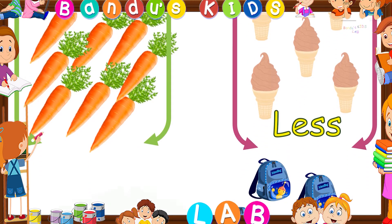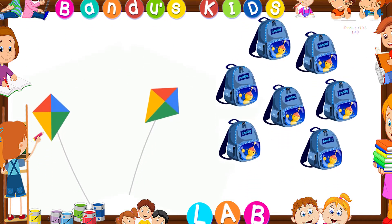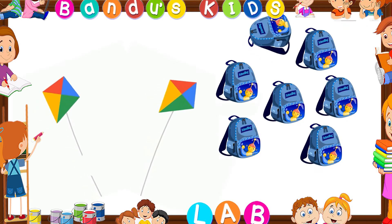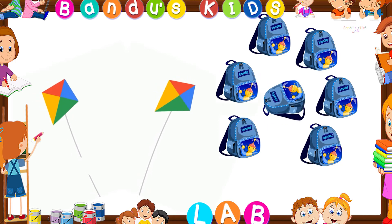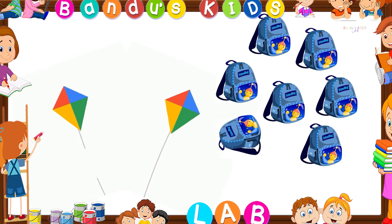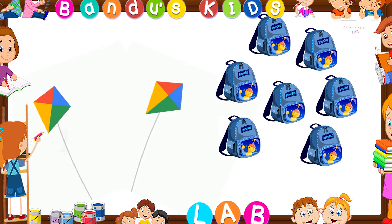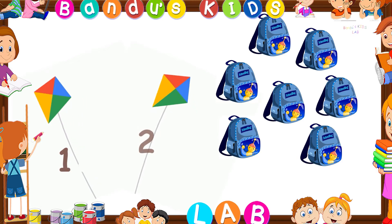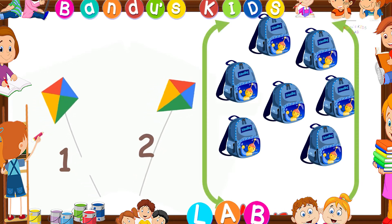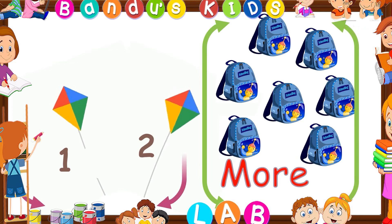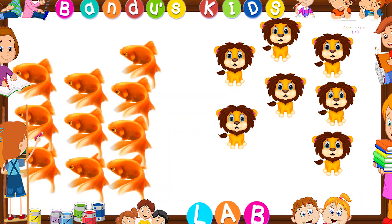Kids, now it's your turn to identify more or less. Which one is the more one here? Let's count: one, two, three, four, five, six, seven — here are seven bags. One, two — here are two kites. Which one is the more one? You're right! It is the set of bags. The set of bags is the more one because there are seven bags and only two kites.